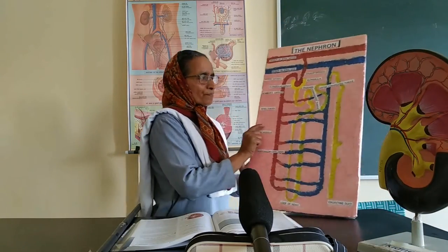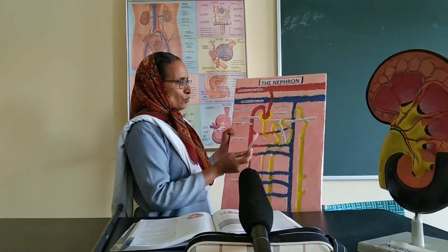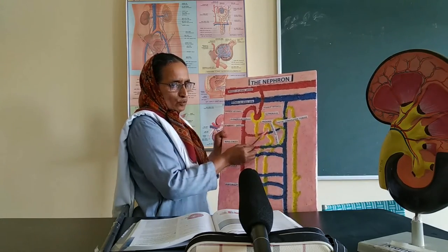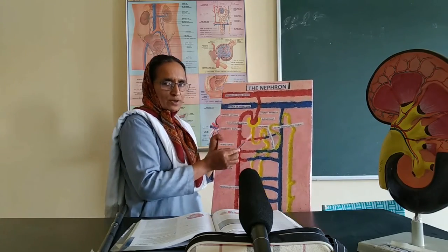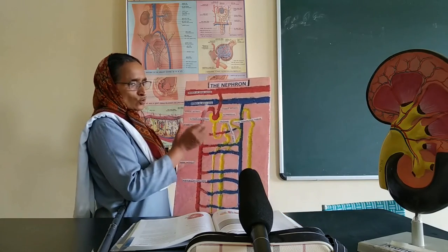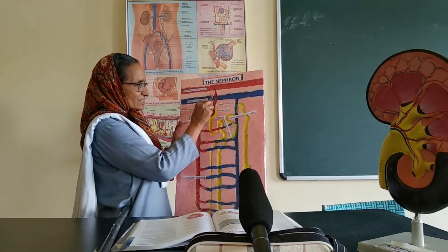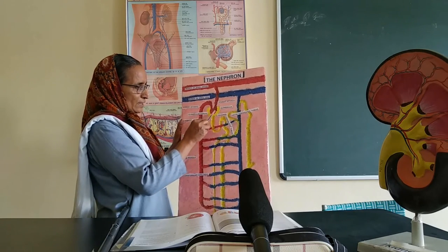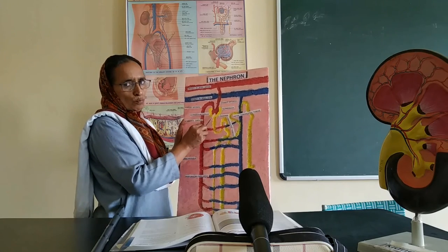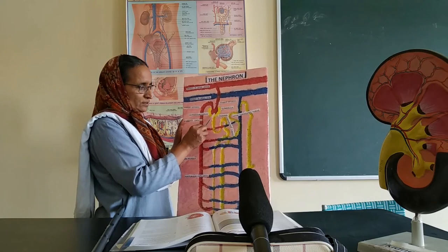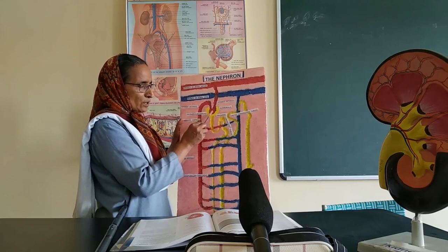Now we will see the nephron. The nephron is the most important aspect in the excretory system. You can see it in your textbook. This is one nephron — like this, millions of nephrons are contained in our kidneys. The branch of the renal artery brings the oxygenated blood and you can see this is a loop of capillaries, a network of capillaries that brings the blood.